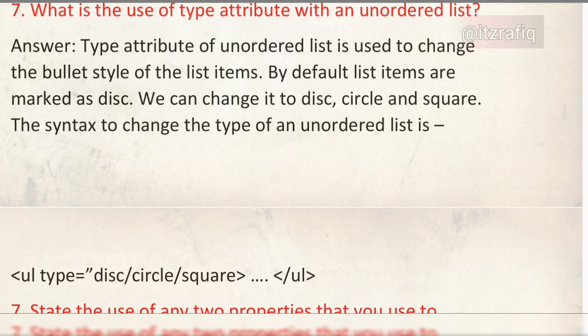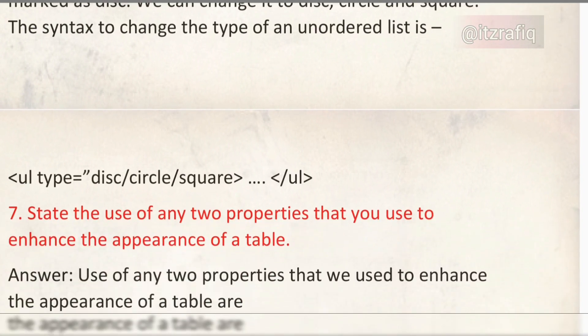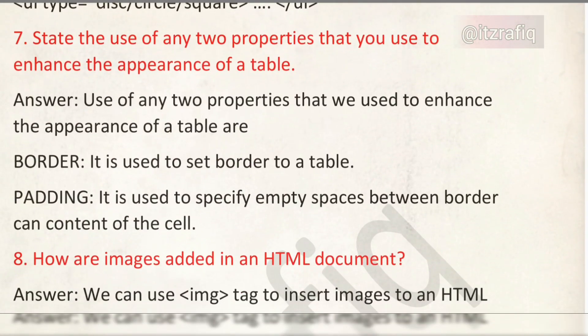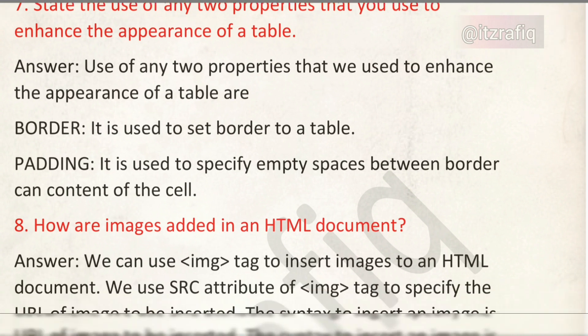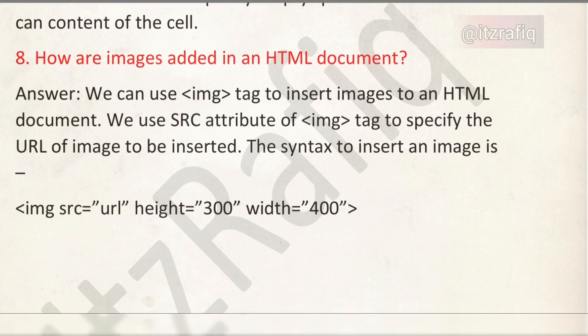The syntax of an unordered list: write ul type equals one of disc, circle, or square, then write the list items, then close the tag. Next: state the use of any two properties to enhance the appearance of a table. You can write border and padding. Border is used to set the border, and padding is used to set empty spaces between content and the border of the cell.